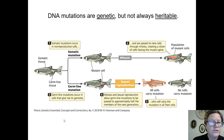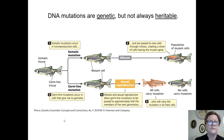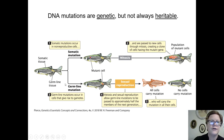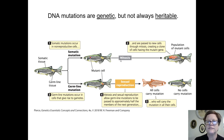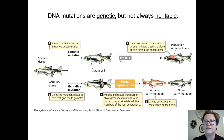This zebrafish has somatic cells, which divide by mitosis, and then it has cells in the germline. In the ovaries or testes, you have cells that go through meiosis. A mutation in the somatic cells would only pass that change to other daughter cells through mitosis. If there's a mutation in one skin cell shown in red, when that cell divides, it copies that mutation, and you'd have a group of body cells that have it, but it's not going to be passed to the next generation.